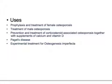The uses of alendronate include: prophylaxis and treatment of female osteoporosis, treatment of male osteoporosis, prevention and treatment of corticosteroid-associated osteoporosis together with supplements of calcium and vitamin D, Paget's disease, and experimental treatment for osteogenesis imperfecta.